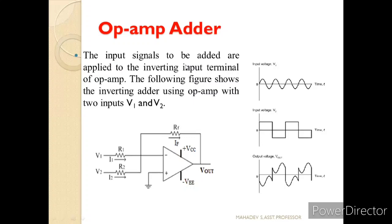Now let us see the next concept of an op-amp acting as an adder. Adder means adding two signals. The inverting terminal is connected to V1 and V2 through R1 and R2 respectively, and I1 and I2 are the respective currents flowing across R1 and R2. A sine wave is applied at V1 and a square wave at V2. The output of adding these two signals gives a particular combined shape — since it is connected to the negative terminal, the positive becomes negative and the negative becomes positive.